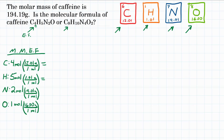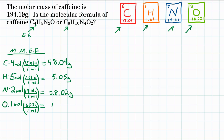By solving all these, we get the number of grams attributed from each element. For carbon: 4 times 12.01 is 48.04. For hydrogen: 5 times 1.01 is 5.05. For nitrogen: 2 times 14.01 is 28.02. For oxygen: 1 times 16 is 16. These are all in grams because our moles cancel out through dimensional analysis.